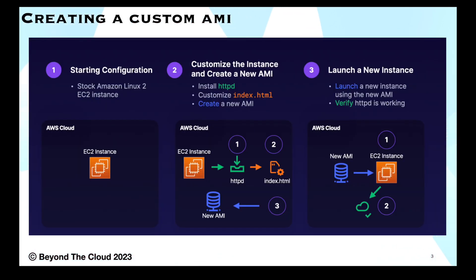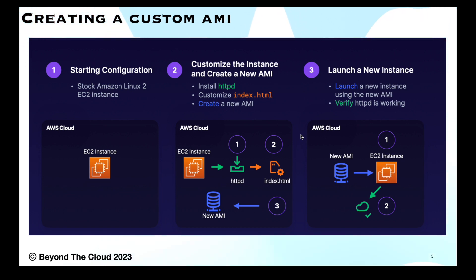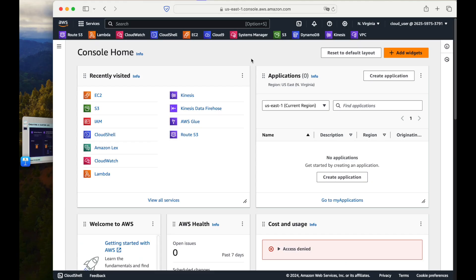In this video, we will create one custom AMI. We will launch an EC2 instance from a pre-configured Amazon Linux 2 distribution, install a PHP application on it, and then create an AMI. From that AMI, we will launch another EC2 instance, where we will see that everything configured on the first instance is already pre-configured on the second one — that is the charm of an AMI.